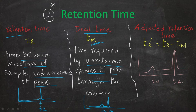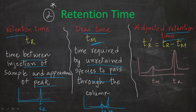When we detect an analyte, the time at which it appears is the retention time. But sometimes an earlier peak appears — this is the dead time peak. It is not a real analyte peak; it represents unretained species like solvents or other components we are not interested in. When unretained species pass through the column, they also show a peak, which remains constant for a specific column and mobile phase. The adjusted retention time is tr minus tm — the difference between retention time and dead time.